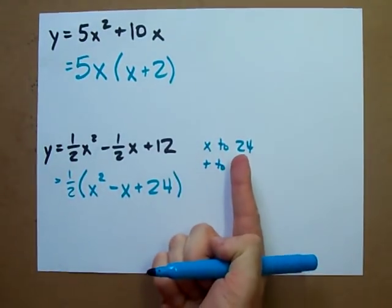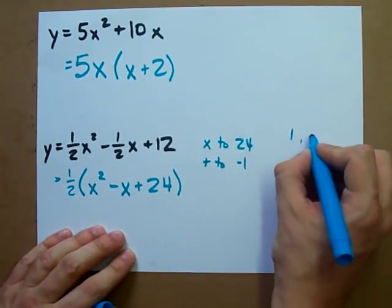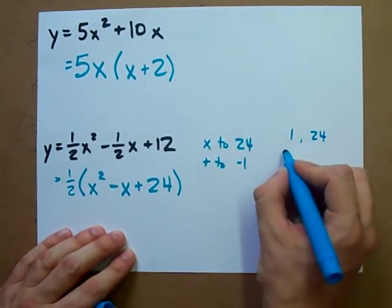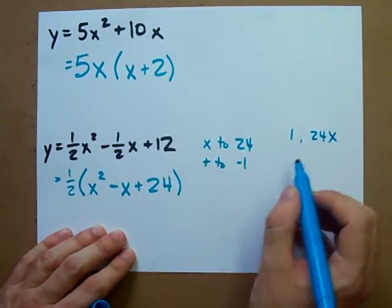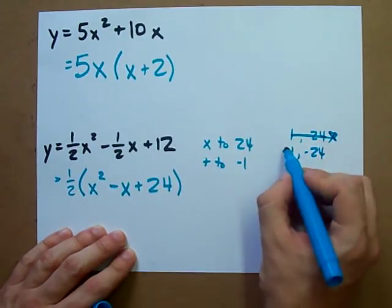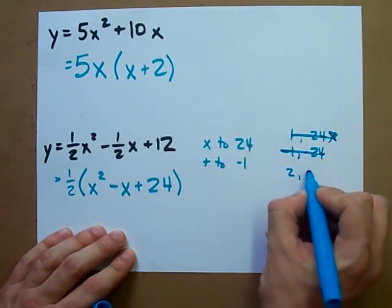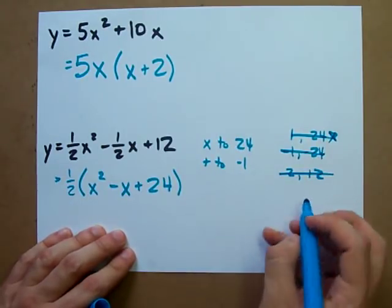Well, we've got to start reaming off pairs of numbers that multiply to 24. 1 and 24, those don't add to negative 1 though, so that's no good. Negative 1 and negative 24, those don't work. 2 and 12 multiply to 24, but don't add to negative 1.